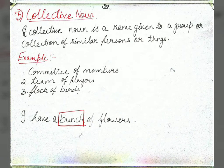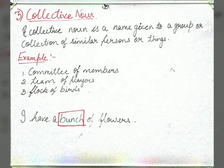A collective noun is a name given to a group or collection of similar persons or things. For example: committee of members — when many members get together they form a committee. Team of players — when many players get together we call it a team. Flock of birds — when many birds are together we call it a flock. A bunch of flowers — when many flowers are together we call it a bunch or bouquet of flowers.